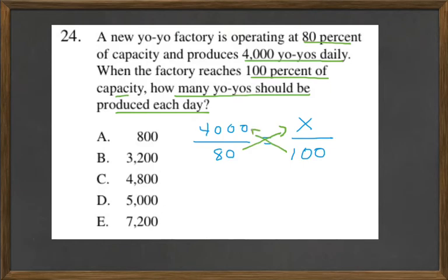So 80 times x is 80x, and that equals 4,000 times 100, which is 400,000.